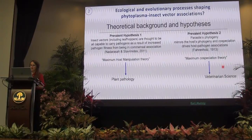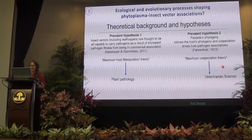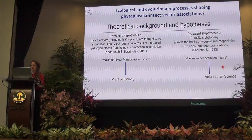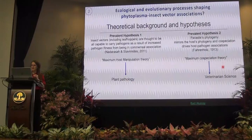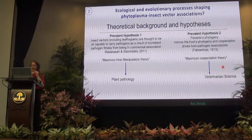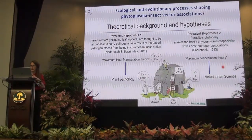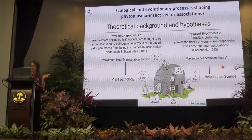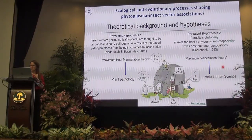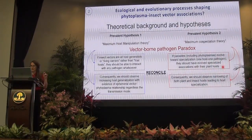On the other end, we have another prevalent hypothesis from veterinary science, known as the maximum co-speciation theory, known since 1913. This hypothesis states that parasite phylogeny mirrors host phylogeny and co-speciation drives host-pathogen associations. Unfortunately, as postulated in the Buddhist parable of the blind men and the elephant, the two hypotheses lead to not necessarily true conclusions — and because most importantly, the two hypotheses generate a paradox.